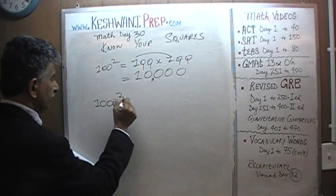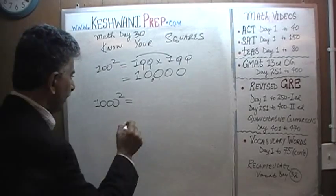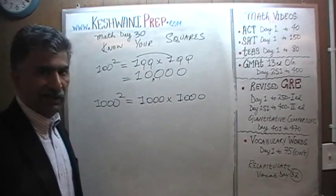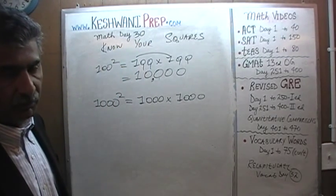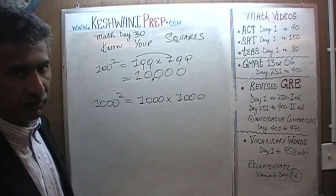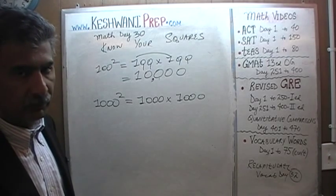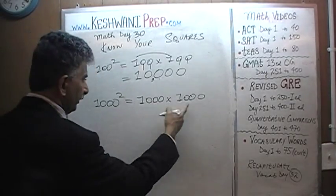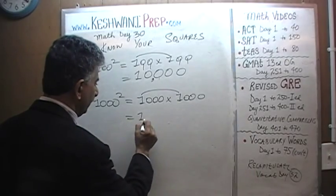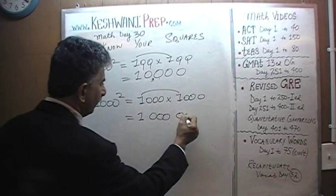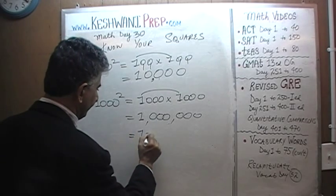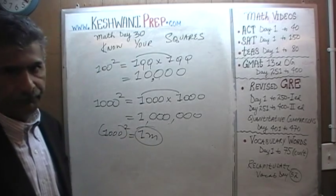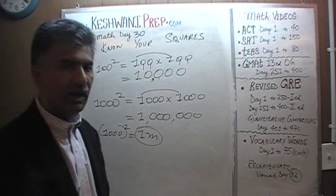How about 1,000 squared? 1,000 times 1,000: 1 times 1 is 1, with six zeros. That's 1 million. 1,000 squared is 1 million.